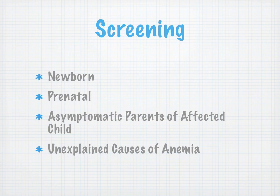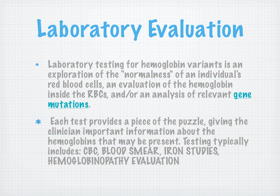Screening for these disorders is done when the baby is a newborn. You can also do prenatal screening, asymptomatic parents of affected child screening, and screening for unexplained causes of anemia. Laboratory testing is an exploration of the normalness of an individual's red blood cells — an evaluation of hemoglobin inside the red blood cells or analysis of the relevant gene mutation. Testing typically includes: CBC with differential, blood smear, iron studies, and a hemoglobinopathy evaluation.